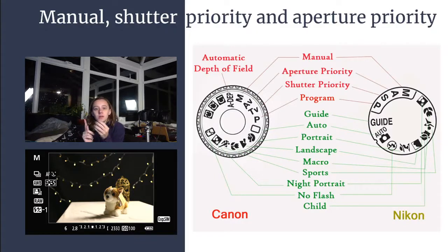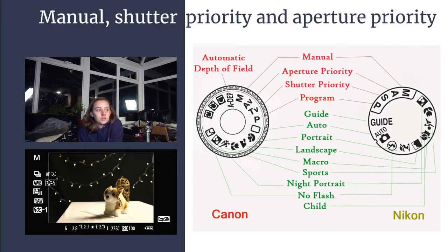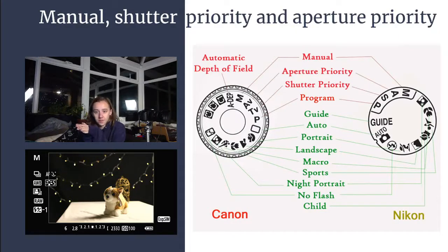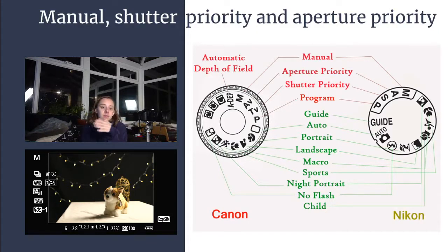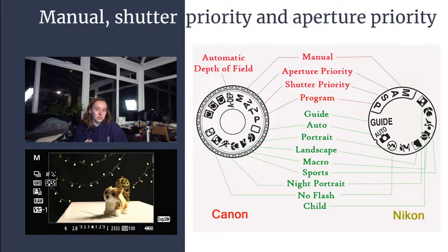Shutter priority: you get to pick the shutter speed, set the ISO at the start, and then the camera decides which aperture to use. This is really good for sports photography where you need to freeze a moment quickly to avoid blur. The one issue is that you are more limited in aperture than in shutter speed, so you run the risk of the camera not being able to achieve the right aperture — and you could end up with an over or underexposed photo. In that situation, if you still need shutter priority, that's when you have to go in yourself and change the ISO to match what you need.